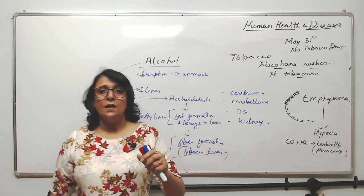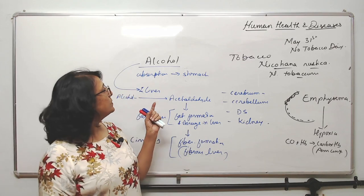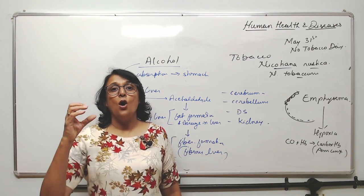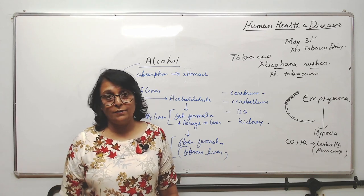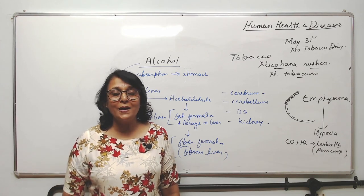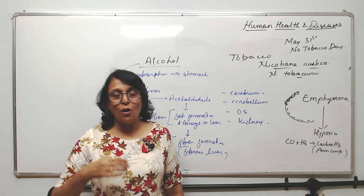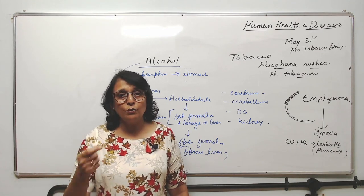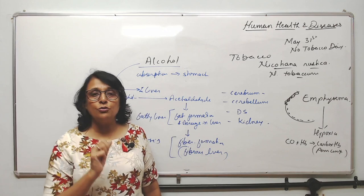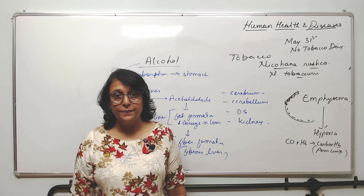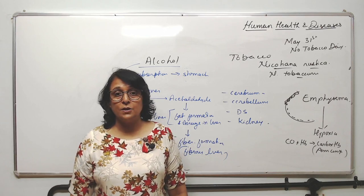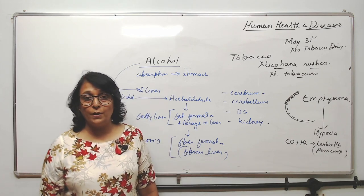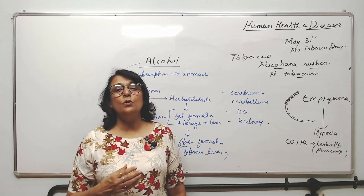The main problem is adolescence — why would a person start taking alcohol or smoking when it is written on every cigarette pack that it is harmful to health? These problems normally start at a young age when you go to college. There is peer group pressure: one person takes it and keeps encouraging you to also try it, and you get influenced. It is the adolescent age when a person gets addicted.